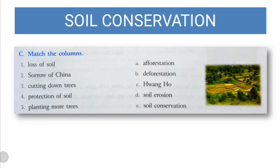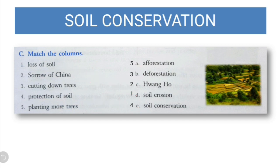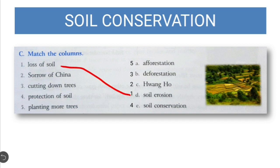Now match the columns. Loss of soil matches with soil erosion. Sorrow of China matches with Wanguo River, because it often changes its course causing loss of life and property. Cutting down trees matches with deforestation. Protection of soil matches with soil conservation. And planting more trees matches with afforestation. These are the correct matches from the chapter.